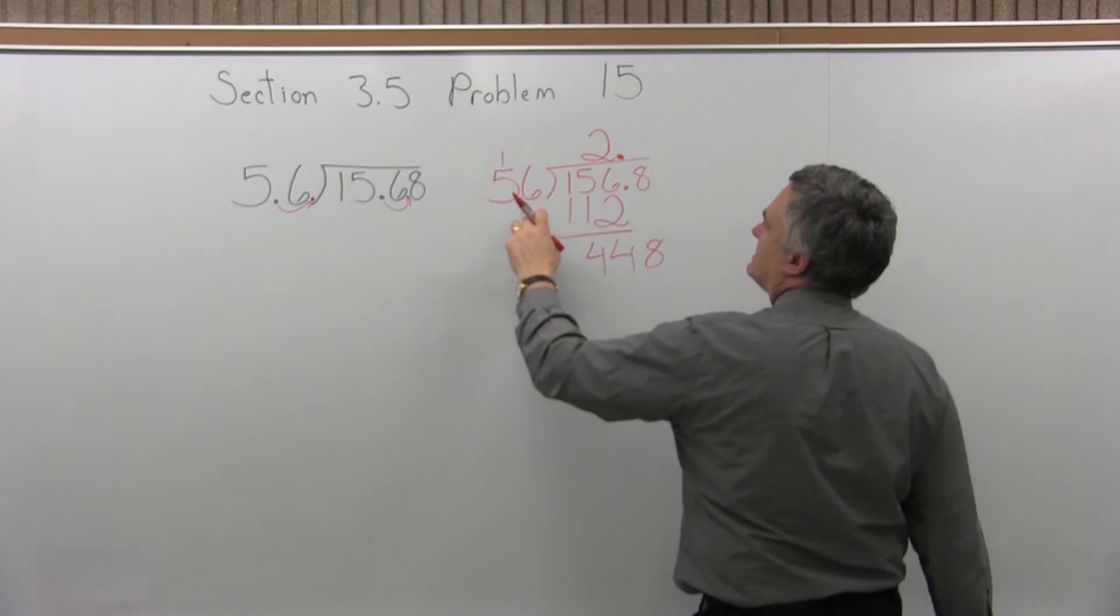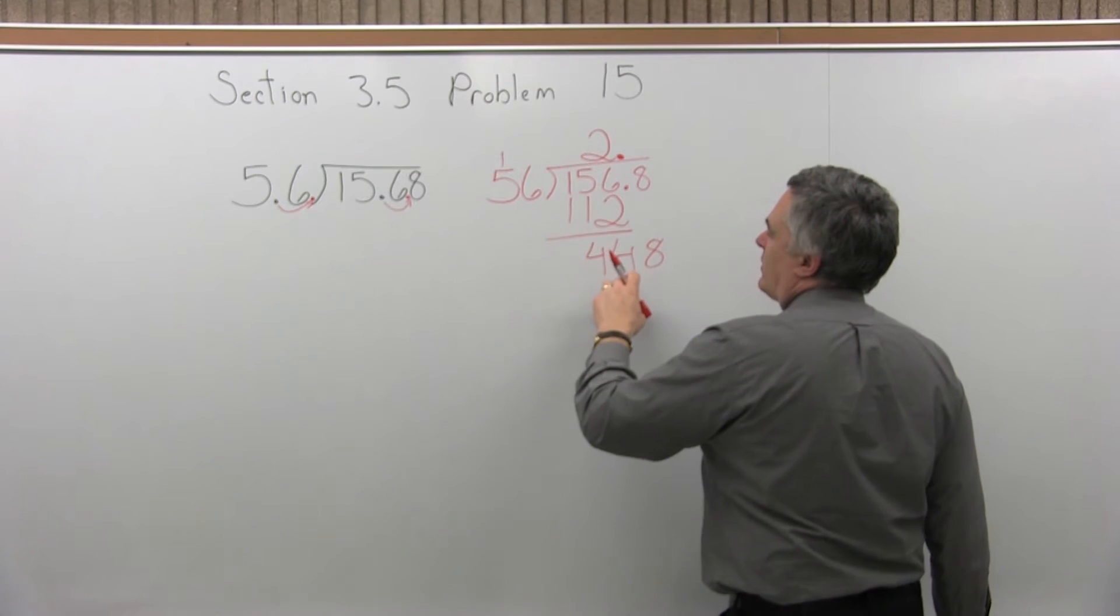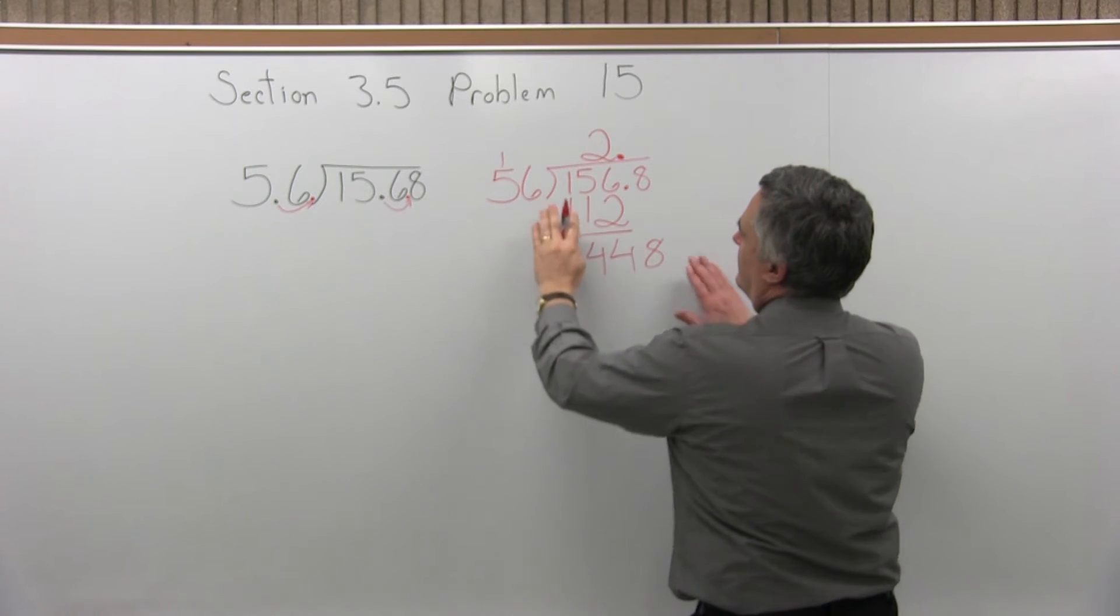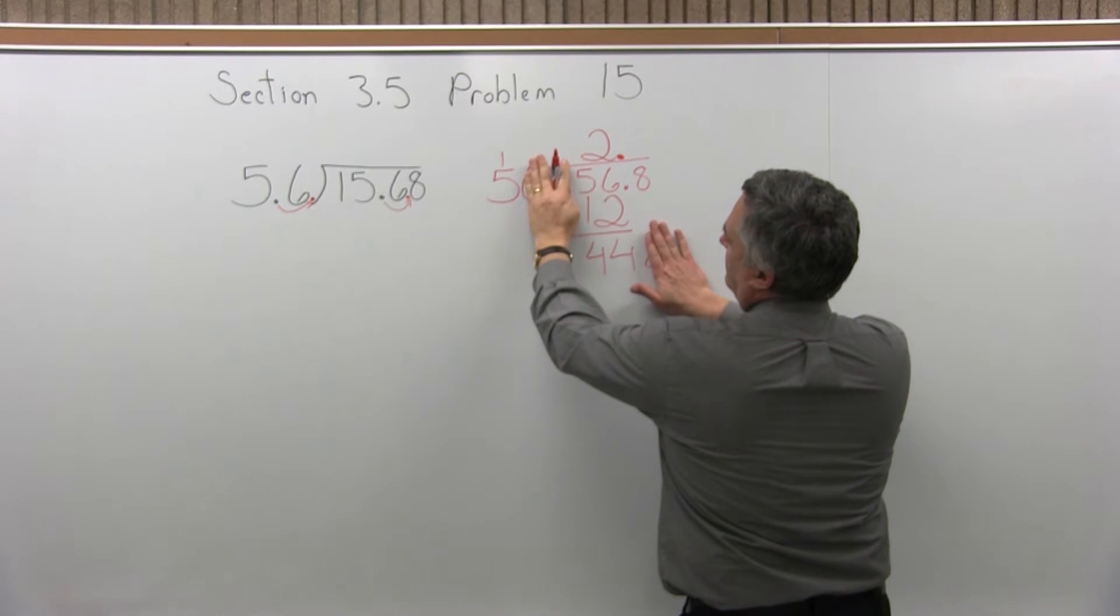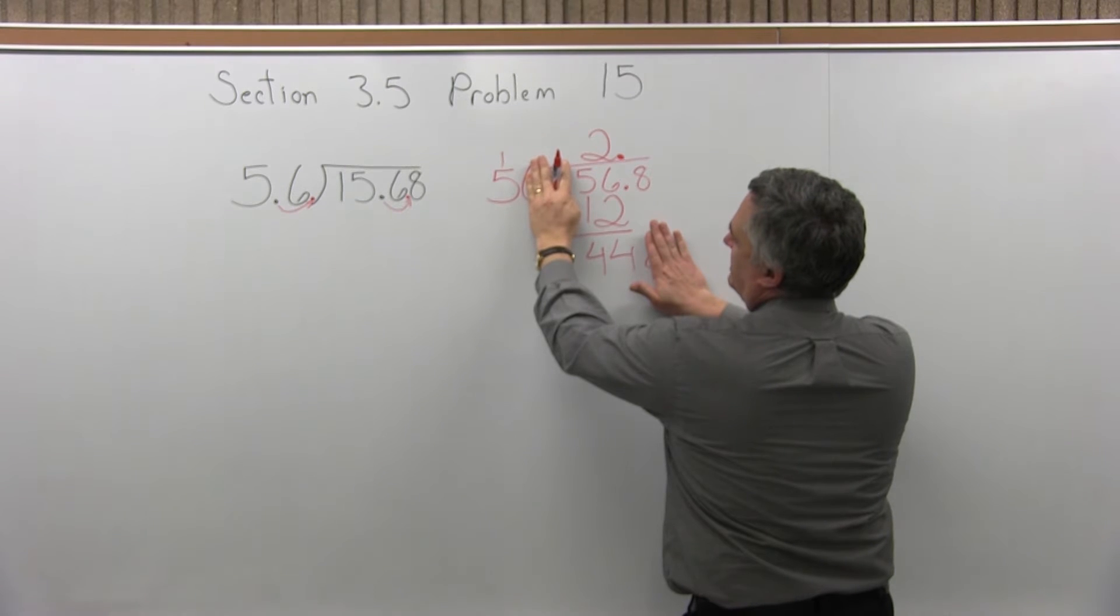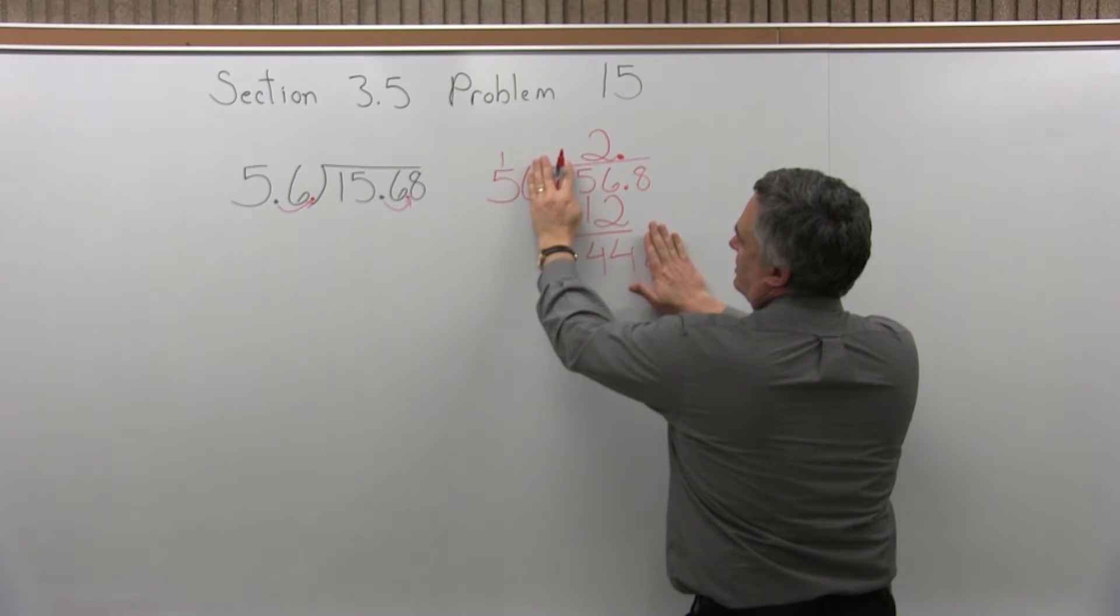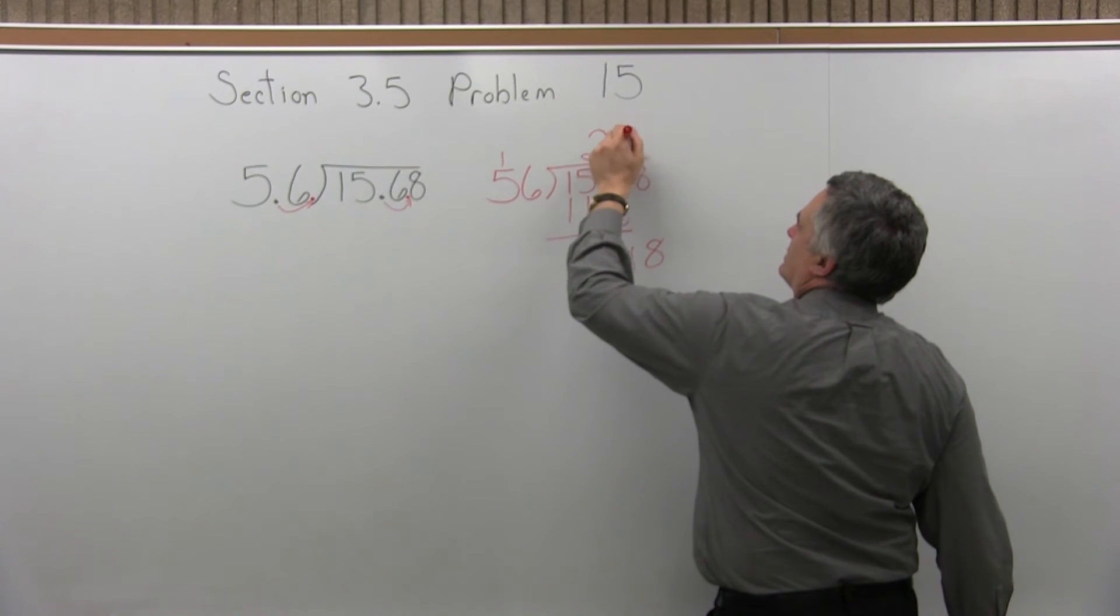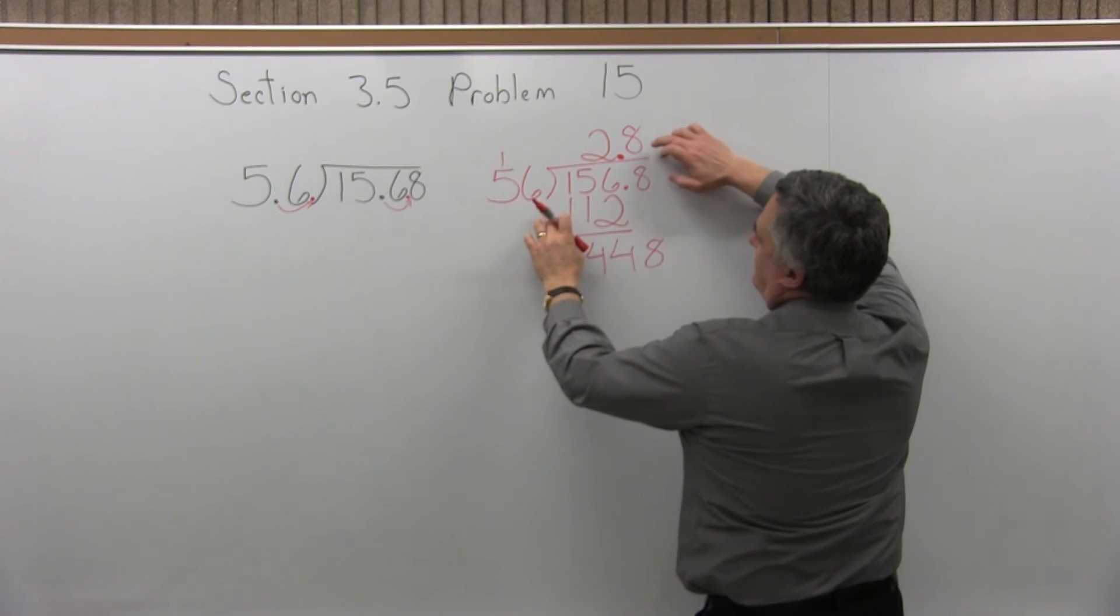Now, 56 will divide into 448 how many times? Well, to get an estimate, just do 5 divides into 44. It should get you pretty close. So you'll get you within one or two tries. So 5 times 8 is 40. That's going to be close. So let's do an 8 and now get a more exact answer.